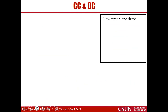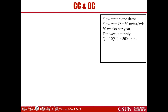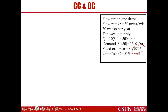So this is the problem. The flow unit is one dress. Demand or throughput is equal to 30 units per week, 50 weeks per year. Each time we order demand for 10 weeks, which is 300 units. Q is 30 times 10, which is 300. Demand per year is 30 times 50, equal to 1,500. Fixed cost of each order is $225. Unit cost is $150. Carrying cost is 20% of 150, which is $30.